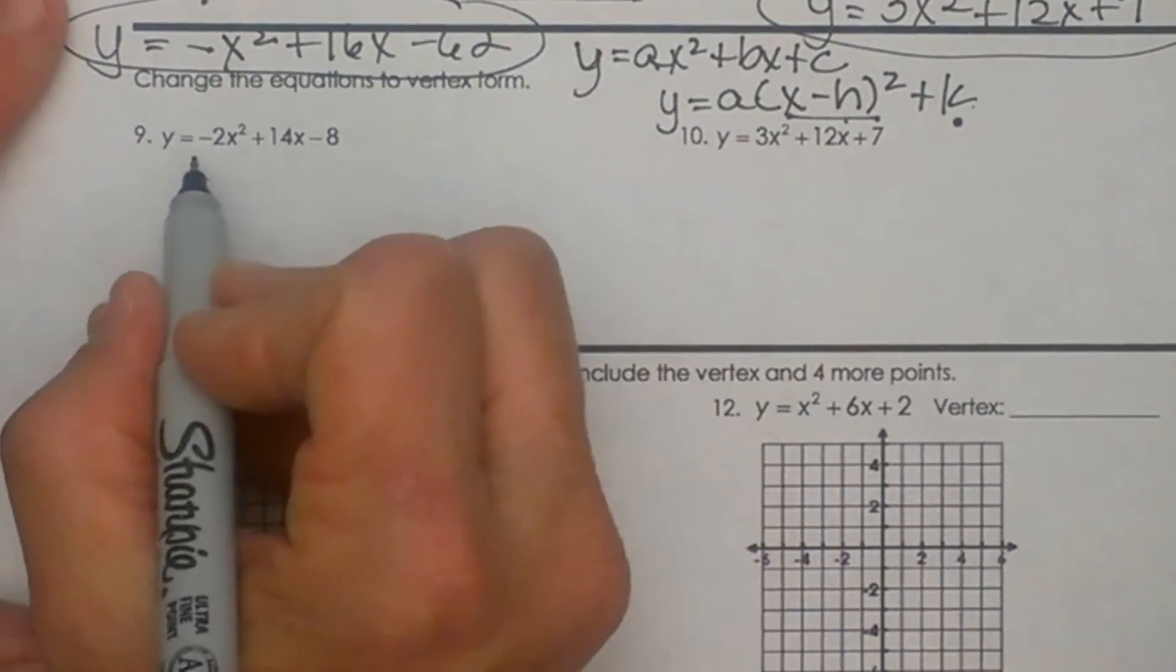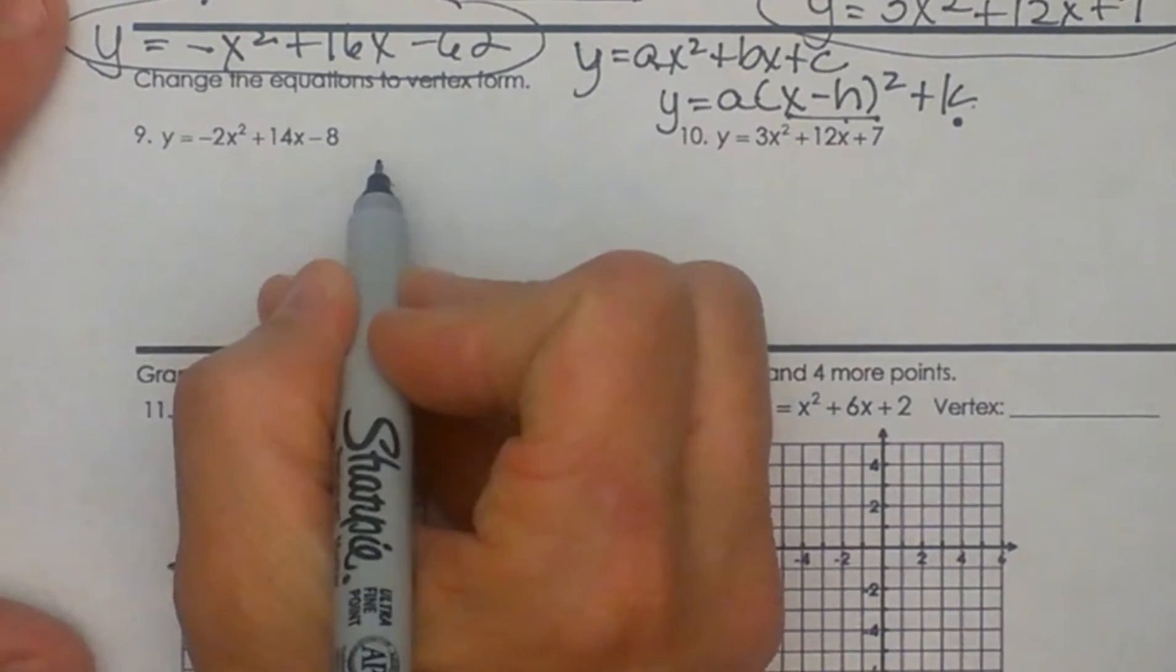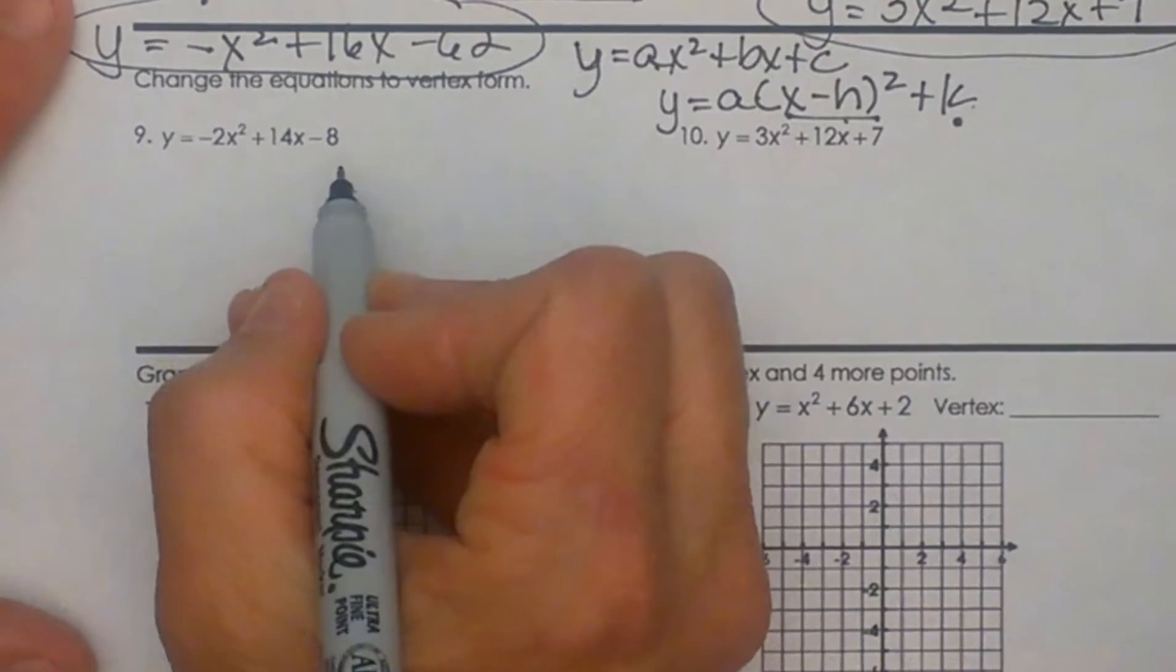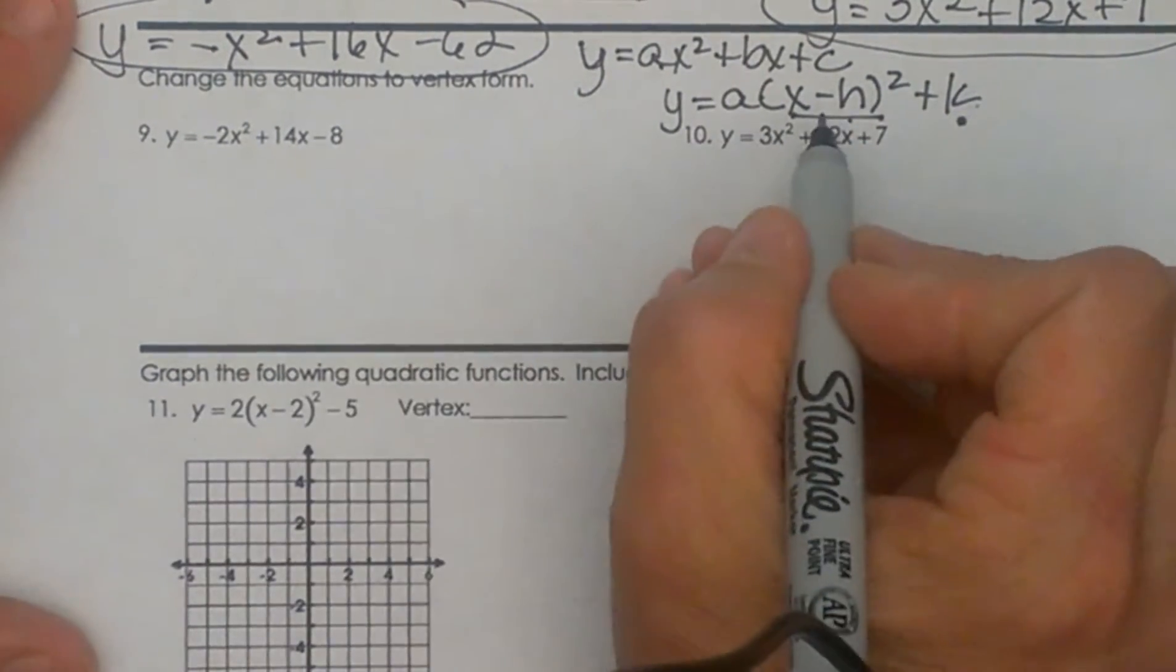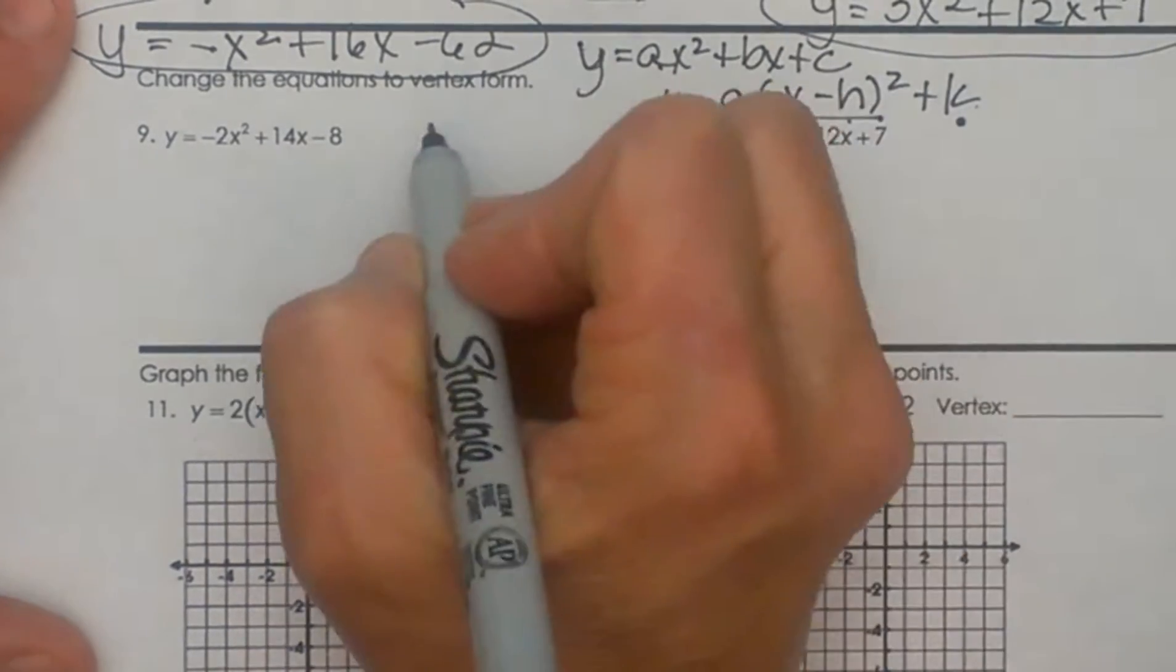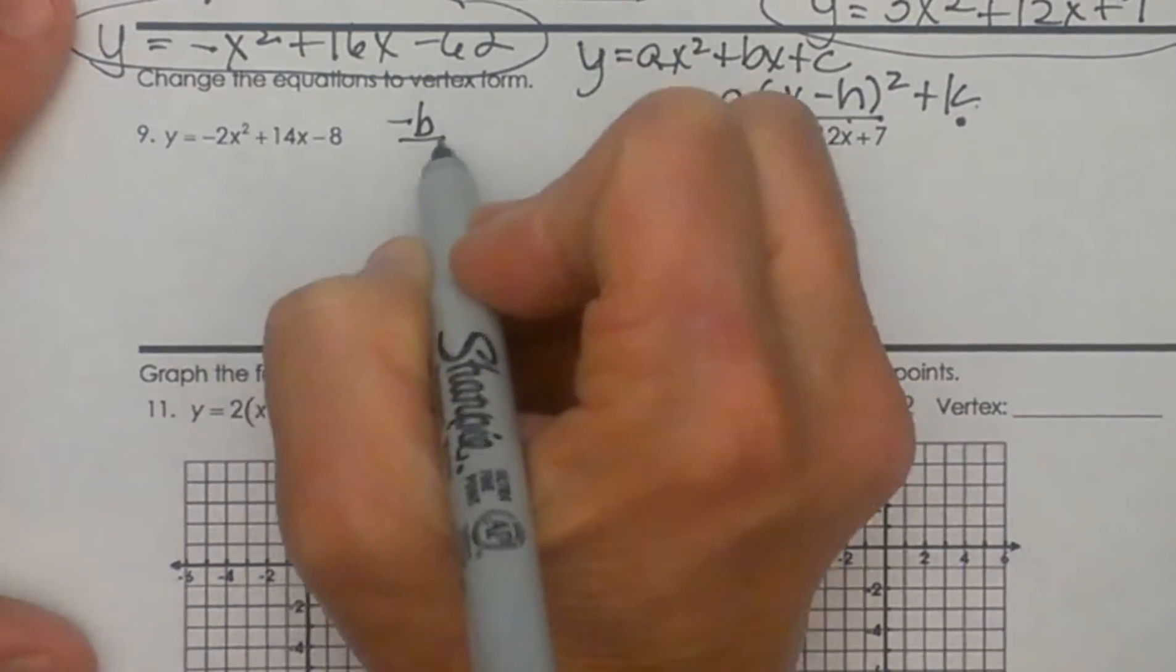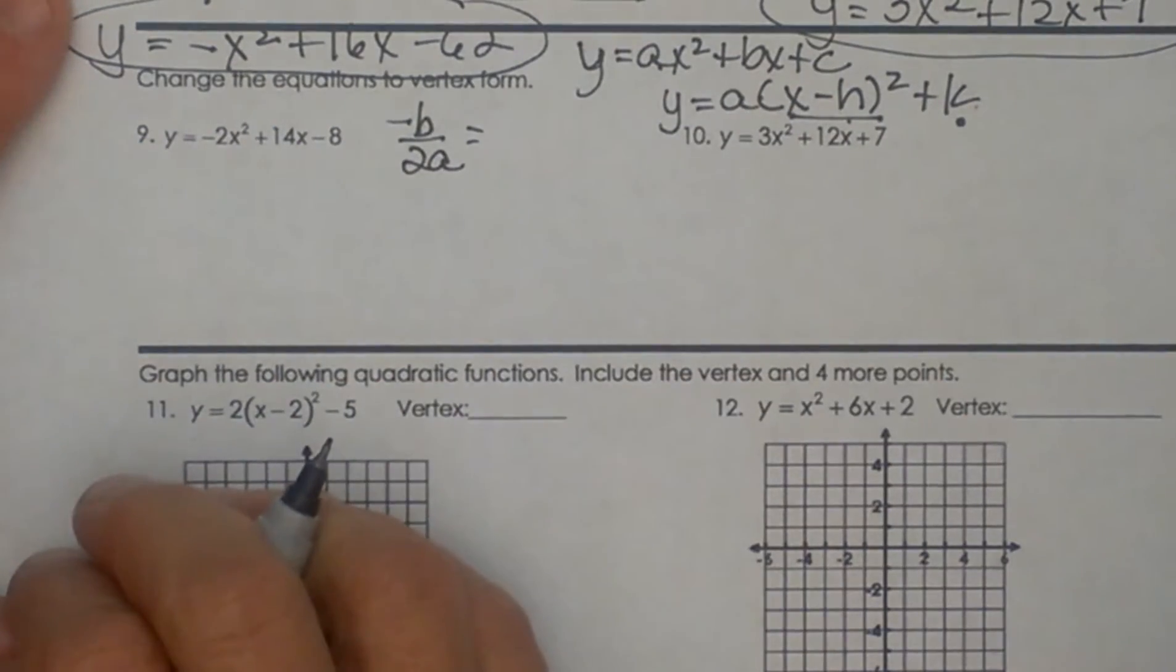So here we are and we have y equals negative 2x squared plus 14x minus 8 and I want to convert it to this other form. Well, the most important point on a parabola is the vertex. So I have a little formula and it is negative b over 2 times a and that will give me the x coordinate of my vertex.